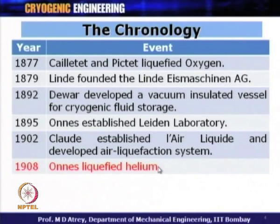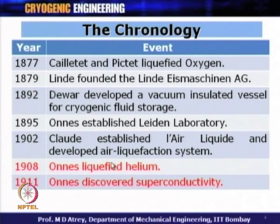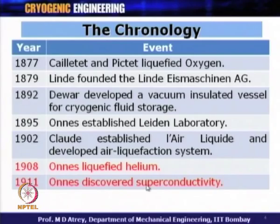Having liquefied helium, scientists began studying material properties at these temperatures. In 1911, Kamerlingh Onnes discovered superconductivity: as temperature decreases, a metal's resistance approaches zero. He showed that mercury becomes superconducting at 4.2 Kelvin, and for this discovery he received the Nobel Prize in 1913. Onnes obtained around 60 cc of helium in this experiment. The next major development moved into engineering applications.